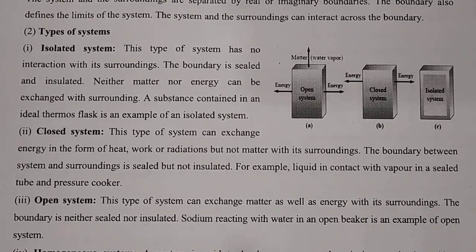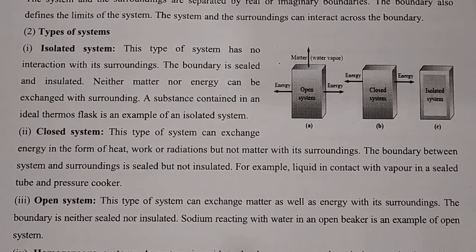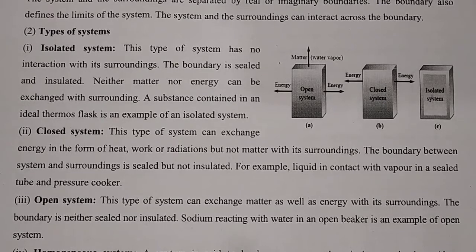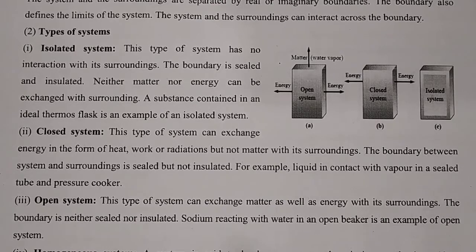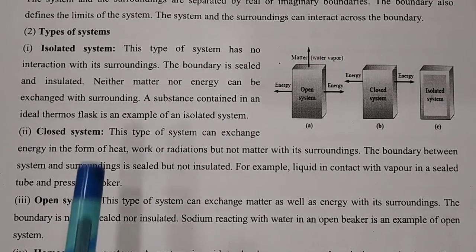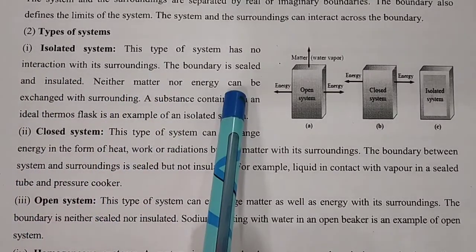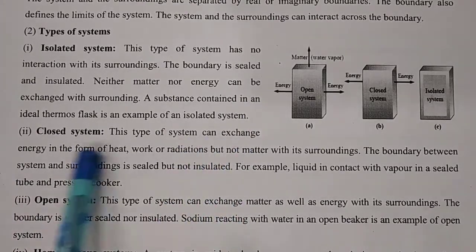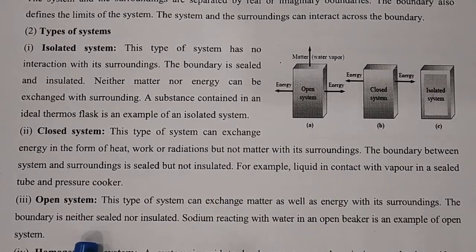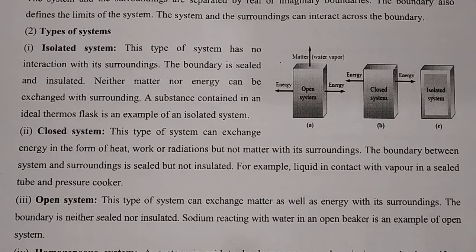Third is the open system. In an isolated system, no energy and no matter can be exchanged. In a closed system, energy can be exchanged but matter cannot. In an open system, both energy as well as matter can be exchanged. This type of system can exchange matter as well as energy with its surroundings. The boundary is neither sealed nor insulated. Sodium reacting with water in an open beaker is an example of an open system.